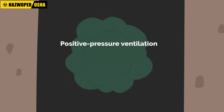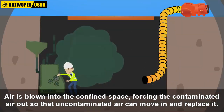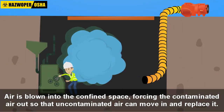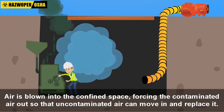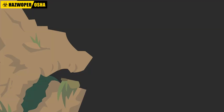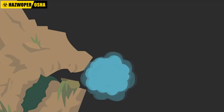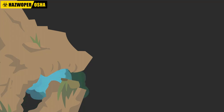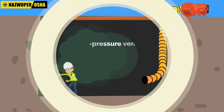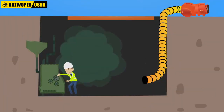In positive pressure ventilation, air is blown into the confined space, forcing the contaminated air out so that uncontaminated air can move in and replace it. Positive pressure ventilation also does a good job of scouring into hidden nooks and crannies to make sure no contaminated air is hiding in such places.